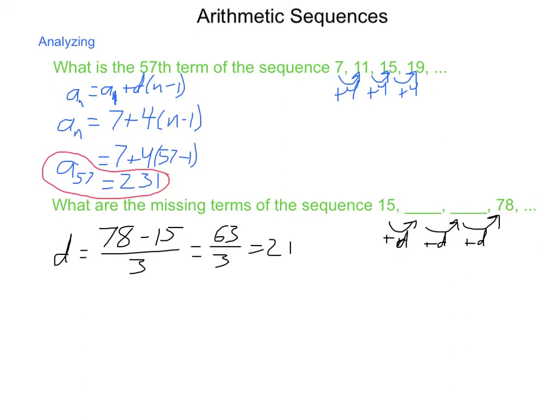So as a recursive formula, a sub n equals a sub n minus 1 plus 21. So how do we move from 15, or what happens if we add 21 to 15? We get 36. If we add another 21 to that, we will get 57. Add 21 to that, we get 78. So the two missing terms were 36 and 57.